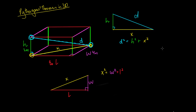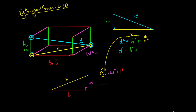So now we have d squared equals h squared plus x squared, and we know that x squared is equal to w squared plus l squared. So what we can do is substitute x squared over here — anywhere we have x squared, we put in w squared plus l squared. So we can rewrite the d squared equation as: d squared equals h squared plus w squared plus l squared. That's a simple substitution.